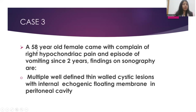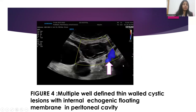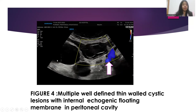Case 3: A 58-year-old female presented with right hypochondriac pain and episodes of vomiting for two years. Sonography findings showed multiple well-defined thin-walled cystic lesions with internal echogenic floating membrane in the peritoneal cavity. Additional lesions at different stages of the life cycle, including cysts without any membrane or echogenic content, were also encountered.